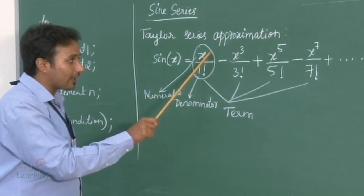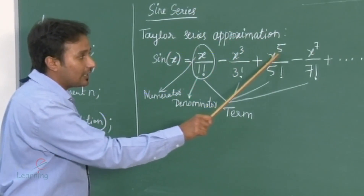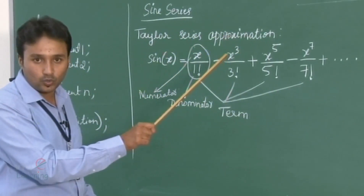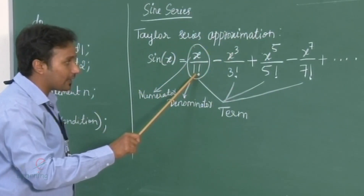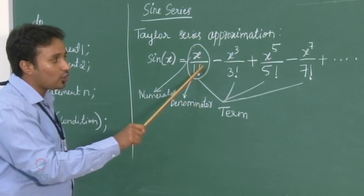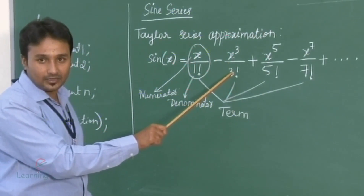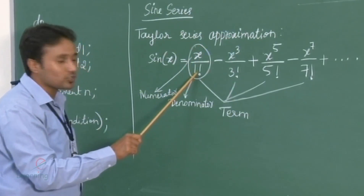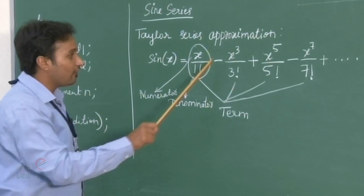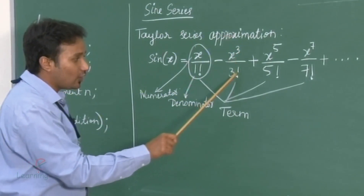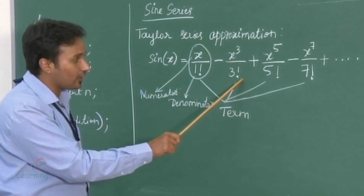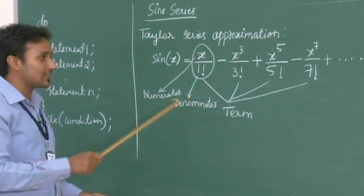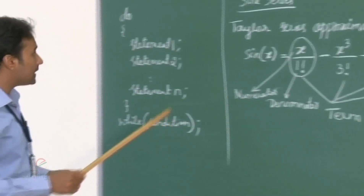In the numerator we can observe that there is a rise in power of degree 2, and in the denominator the corresponding factorial will be there. That is, for x to the power of 1 the denominator is 1 factorial, for x to the power of 3 the denominator is 3 factorial, and so on.